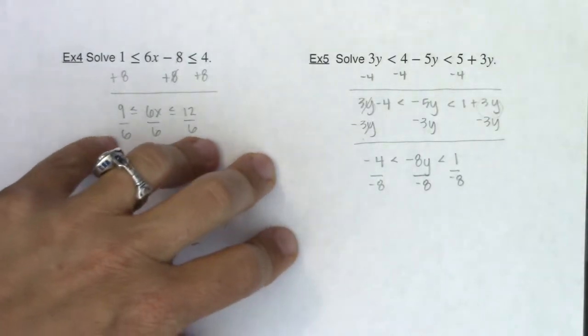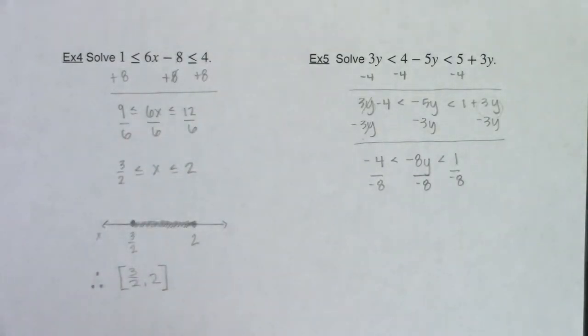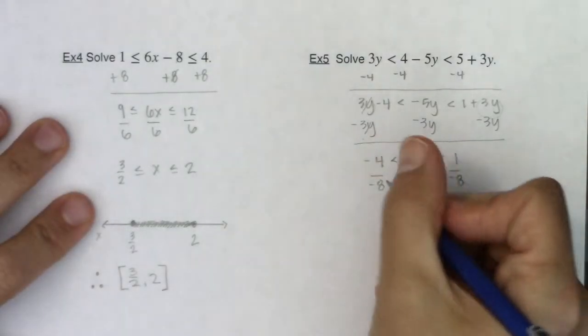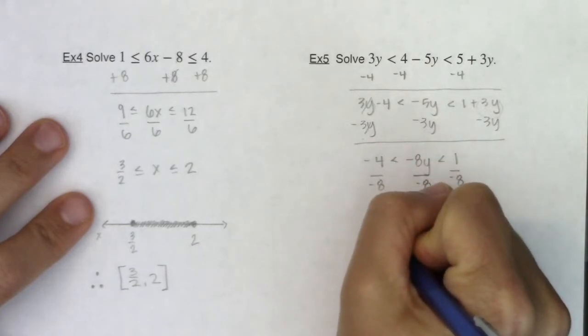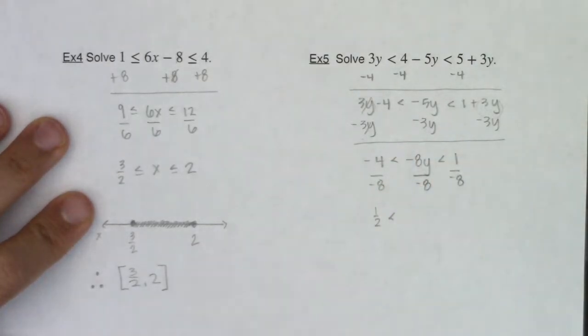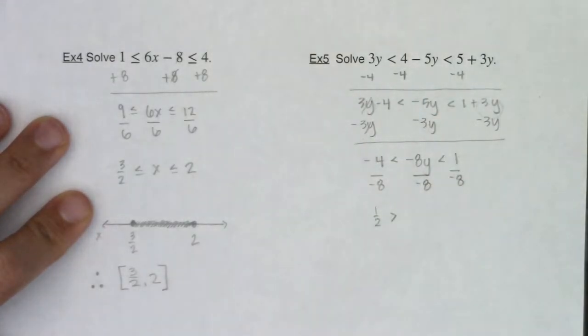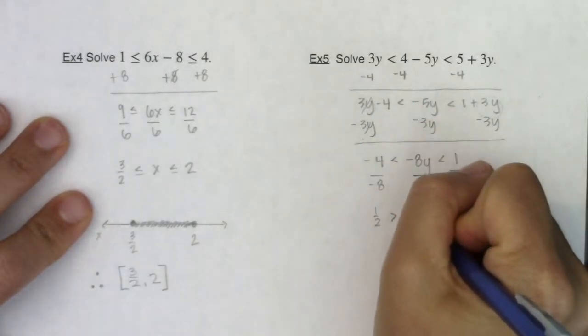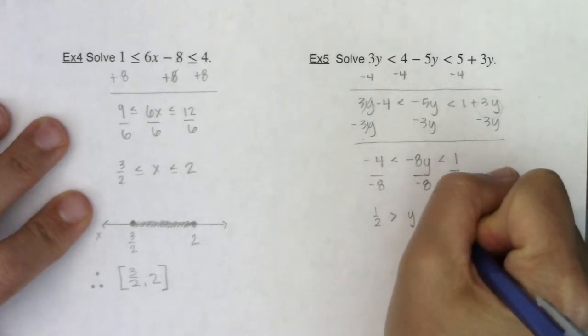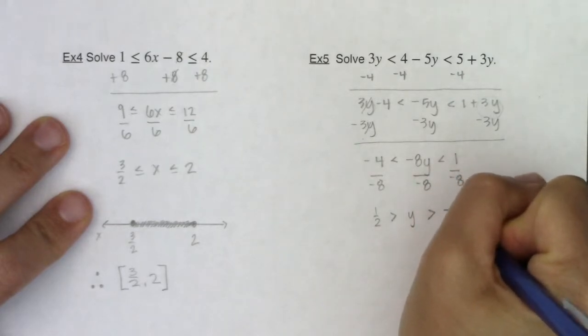Now, I hope some of your spidey senses are going off. You're like, okay, I'm dividing by a negative number. I've got an inequality. I've got to change the direction of the inequality. So we'll put one half here. Oops, I just made my own mistake. I've got to change the direction of the inequality to a greater than. I'm going to put a y here and I'm going to put a greater than negative one eighth.